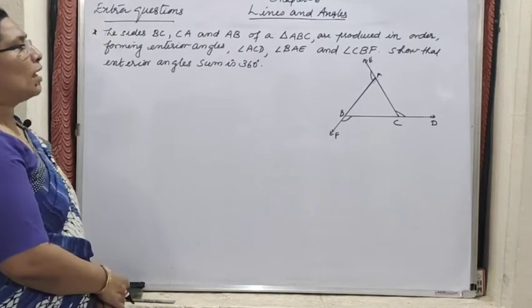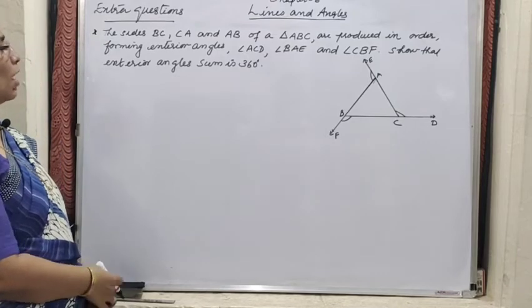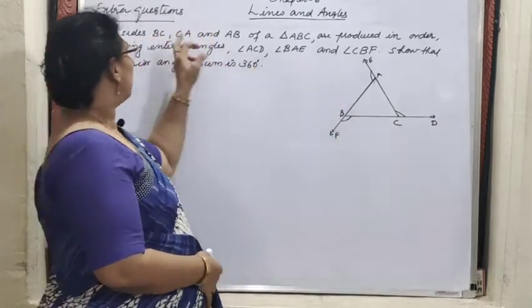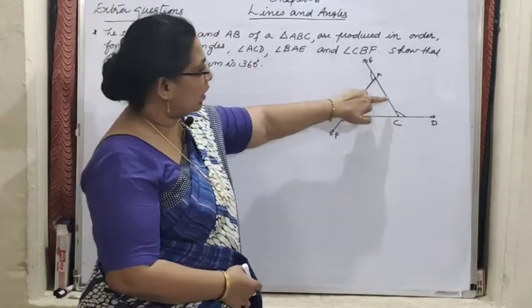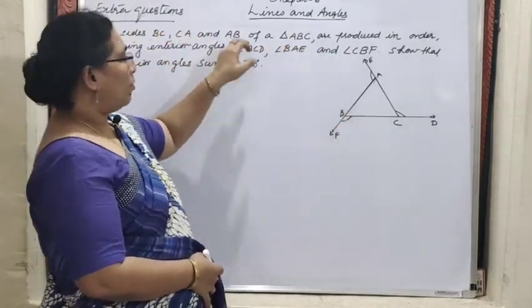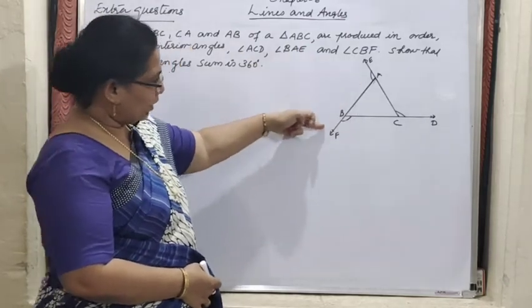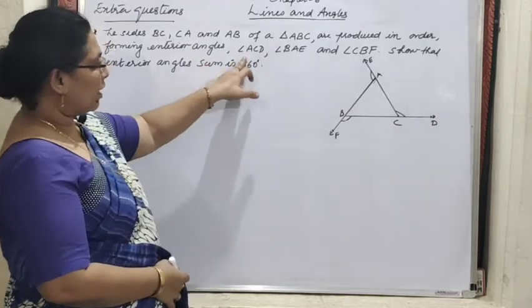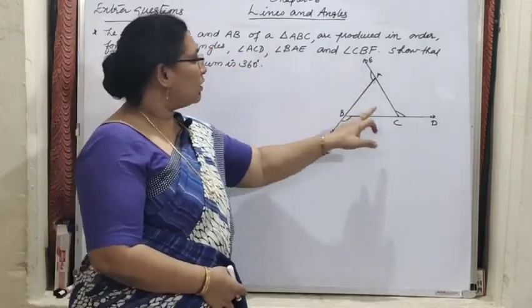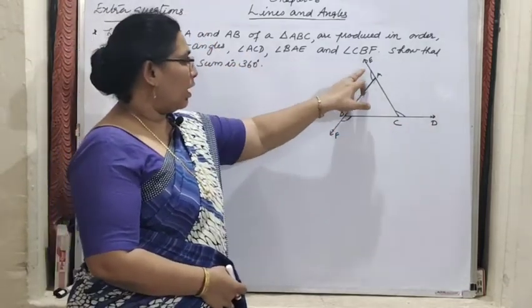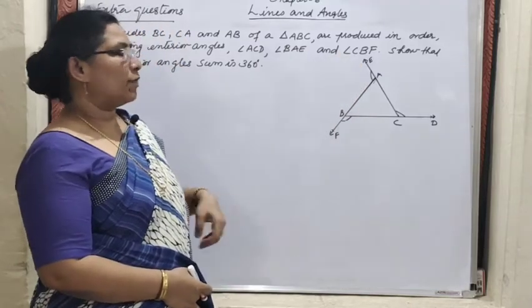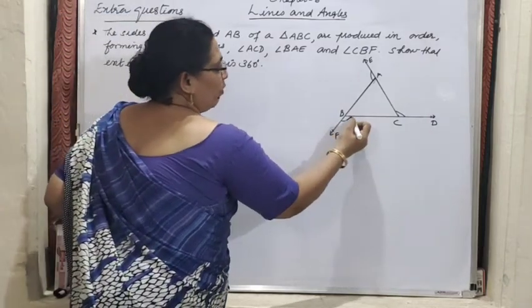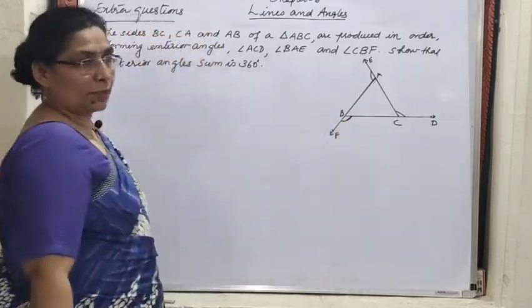Next question: sides BC, CA and AB of triangle ABC are produced. BC is produced to D, CA is produced to E, and AB is produced to F. So we are getting exterior angles: ACD, BAE, and CBF. The sum of exterior angles is always 360 degrees. We have marked them and have to prove this by geometrical method.